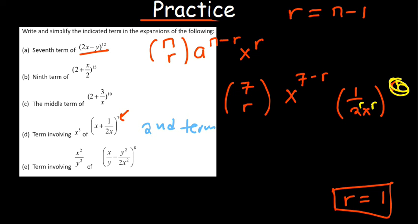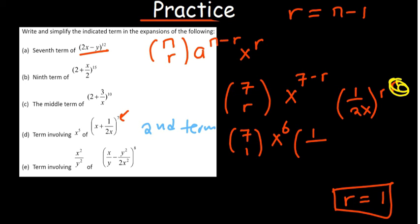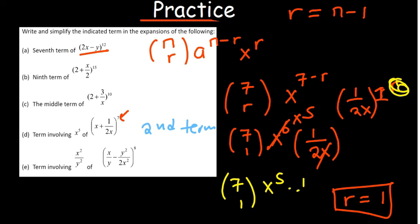To verify: if r is 1, we have 7 choose 1, x to the power 7 minus 1 which is 6, and 1 over 2x raised to power 1. The x in the denominator cancels one power from x to the 6, leaving x to the power 5. So the answer is 7 choose 1 times x to the power 5 times 1 over 2, confirming this term has x to the power 5.